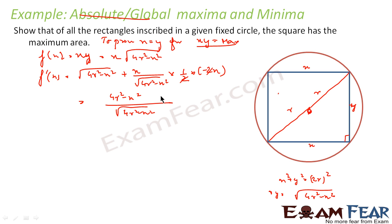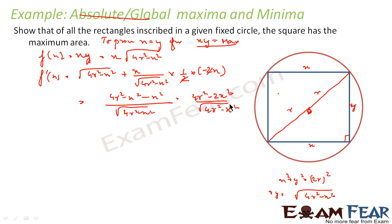Simplifying f'(x): the numerator becomes (4r² - x²) - x², which gives 4r² - 2x², all over √(4r² - x²). So f'(x) = (4r² - 2x²) / √(4r² - x²). For maximum, this has to equal zero.